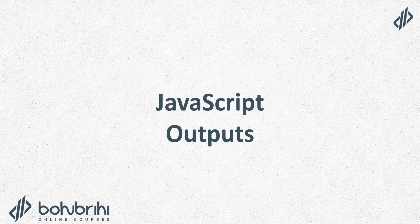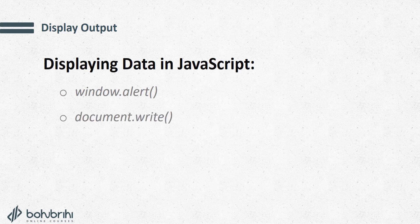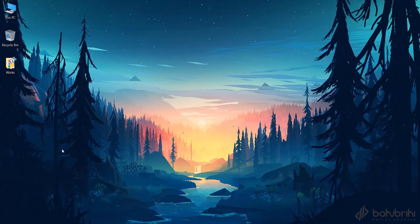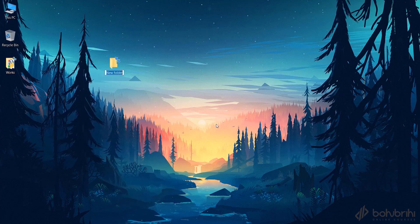Let's talk about JavaScript's output. Output is a basic method in any programming language. In JavaScript, the first method is window.alert, the second is document.write, and the third is console.log. These are the output methods we can use. This is JavaScript practice.